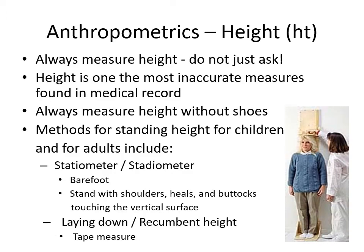When assessing height, always measure — don't just ask. People are very prone to misremembering or not knowing their true height, making it one of the most inaccurate measurements found in medical records. Height is always assessed without shoes. For children over age two and adults, we use a stadiometer — standing barefoot with shoulders, heels, and buttocks touching a vertical surface. For recumbent height or a patient lying down, we use a tape measure.